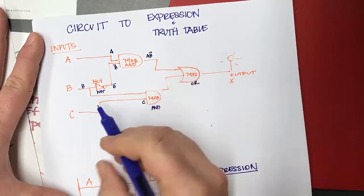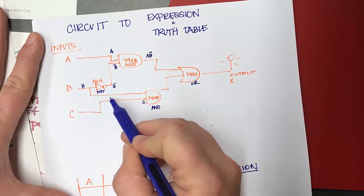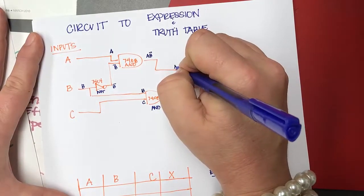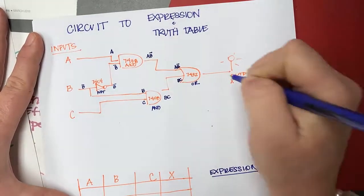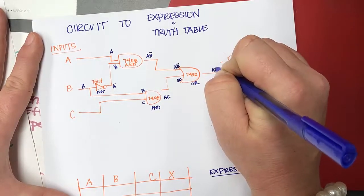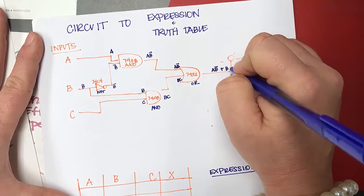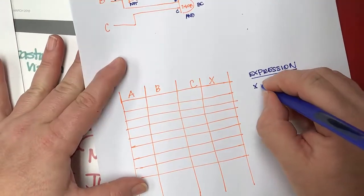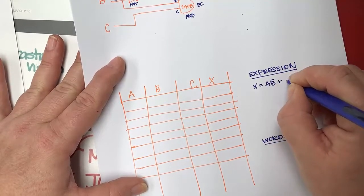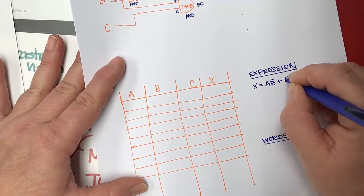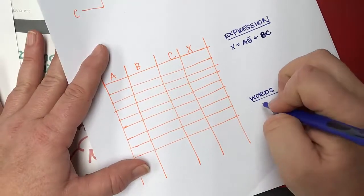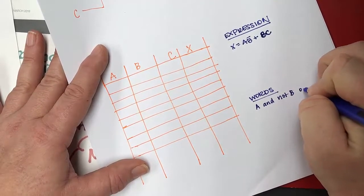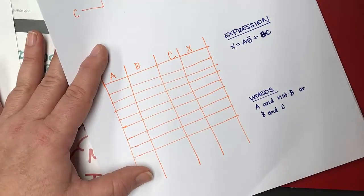So this is A AND NOT B, and you write it like multiplication. Then this is the C line. B goes into the second AND gate before the NOT gate splits off, so this one would be B AND C. So now I have A·NOT(B) coming in and B·C coming in, so the output is A AND NOT B OR B AND C. We write this as X = A·NOT(B) + B·C.